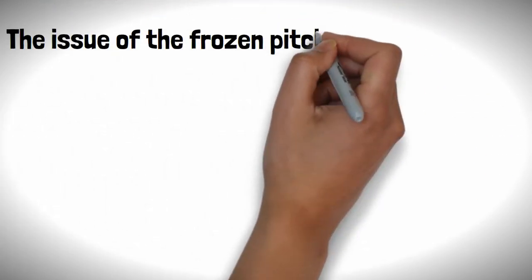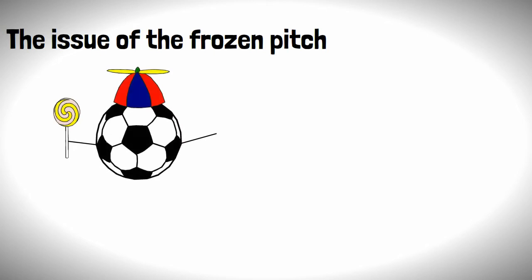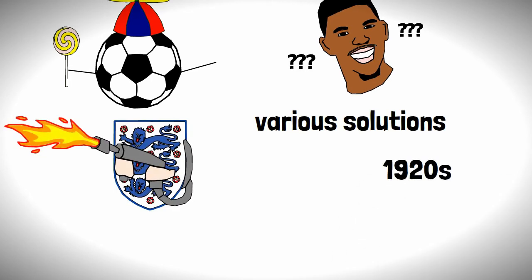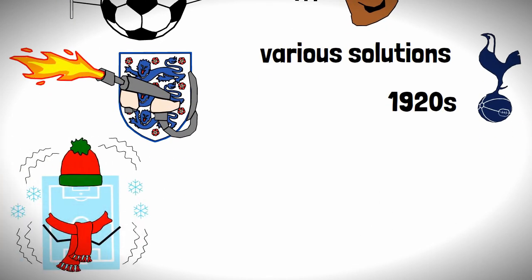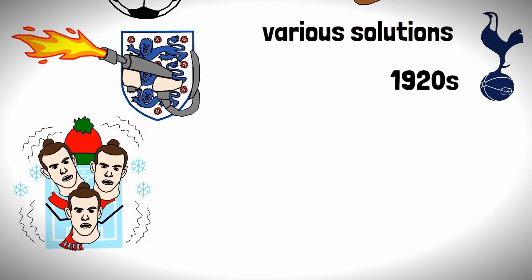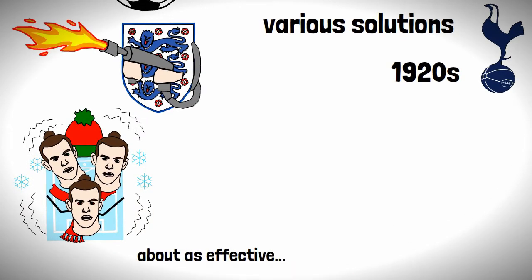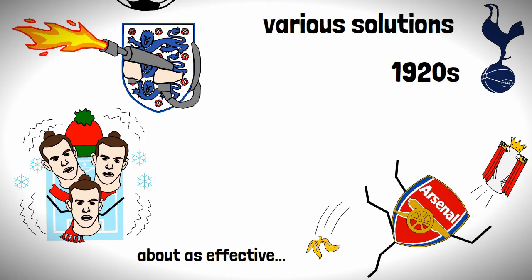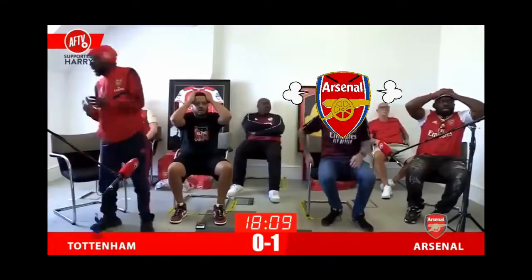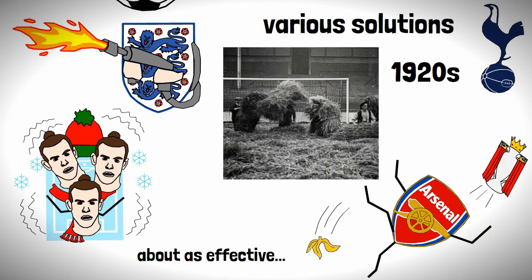The issue of the frozen pitch goes back to the start of football with various solutions being used to solve the conundrum including flamethrowers and in the 1920s Tottenham even tried to stave off a frozen pitch by putting bales of hay on it. However as you could probably guess this was about as effective as an Arsenal title charge and just resulted in the pitch being one big farmyard.